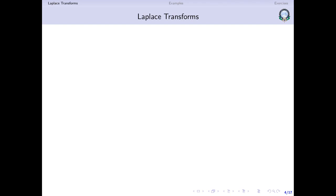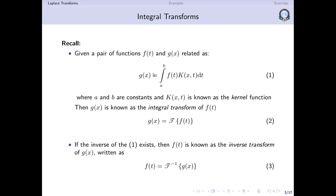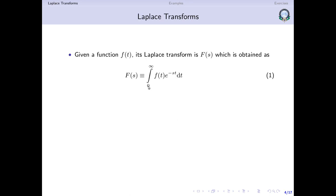Coming to the Laplace transform: given a function f of t, we generally use lowercase f to represent the function being transformed, and capital F to represent its Laplace transform. Some books use f-tilde. Here we use capital F of s. For the original function the variable is t, and in the Laplace transform the variable is s. The Laplace transform is obtained as the integral of f multiplied by e to the power minus st, integrated from 0 to infinity. So here a is 0, b is infinity, and the kernel function is e to the power minus st.